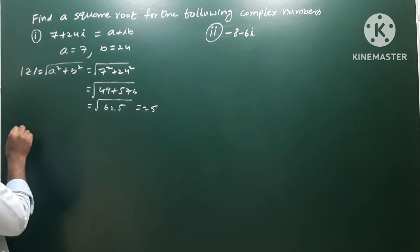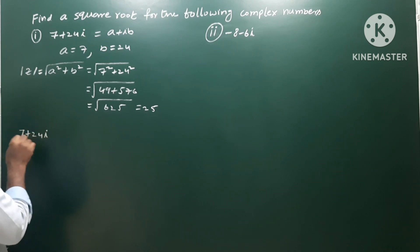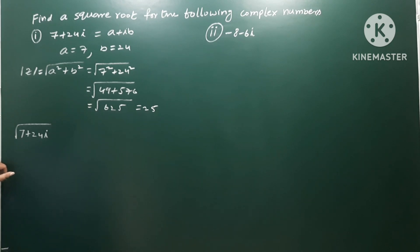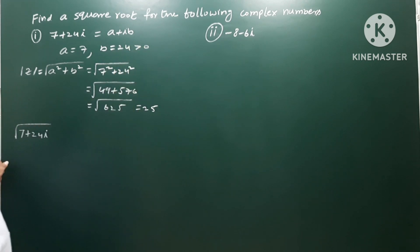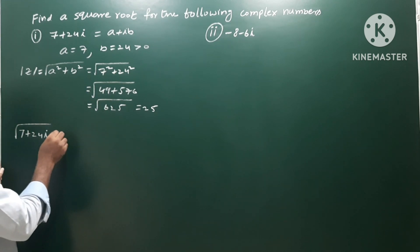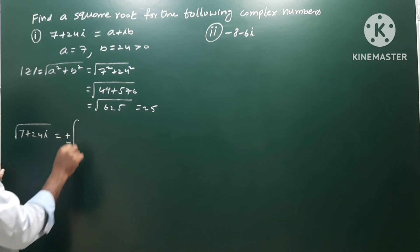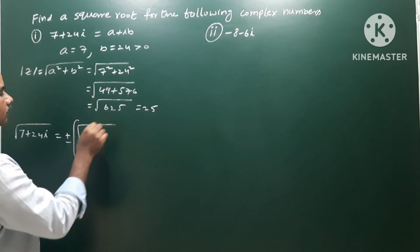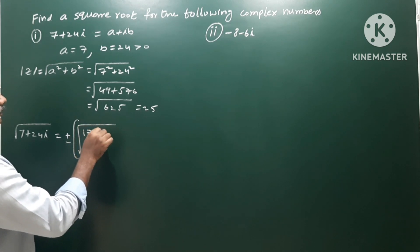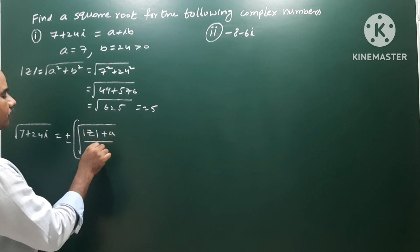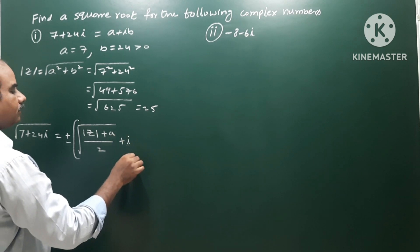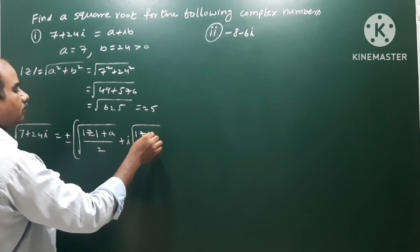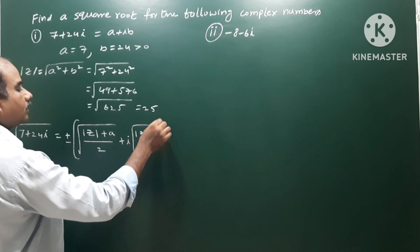Therefore, square root of 7 plus 24i. We'll use the formula. Here b is the imaginary part. If b is greater than 0, the formula gives plus or minus: square root of (mod z plus a) by 2, — that is the real part — plus i into square root of (mod z minus a) by 2 — that is the imaginary part, which is positive. This is the formula.